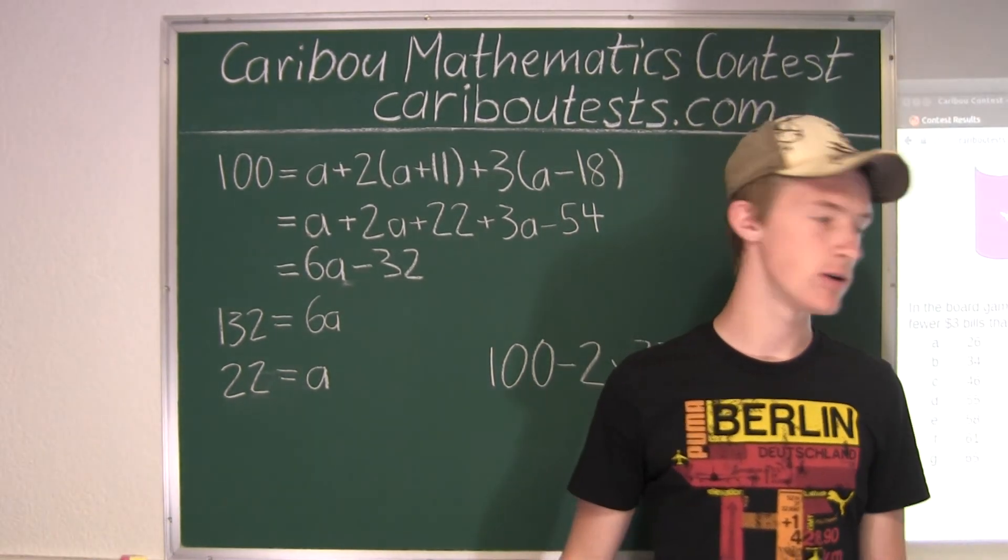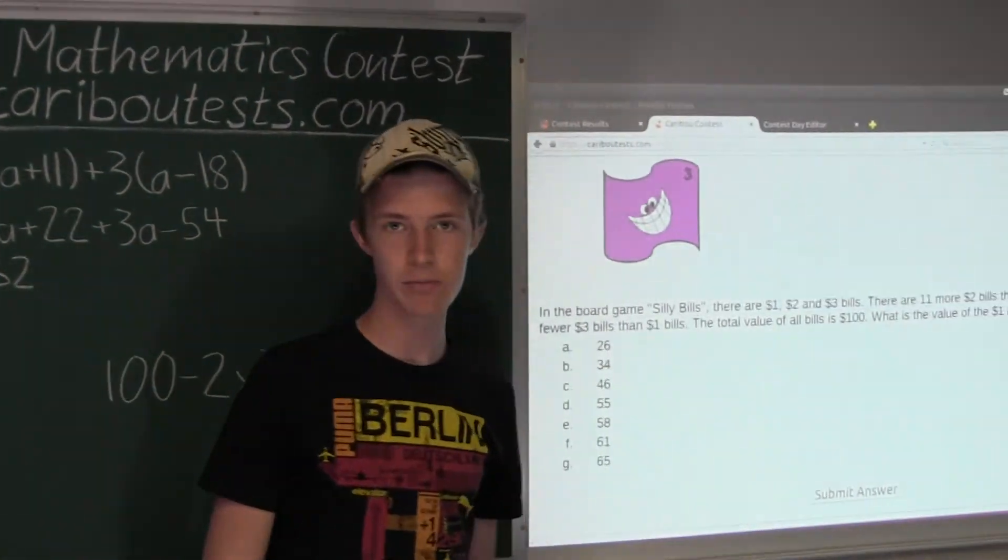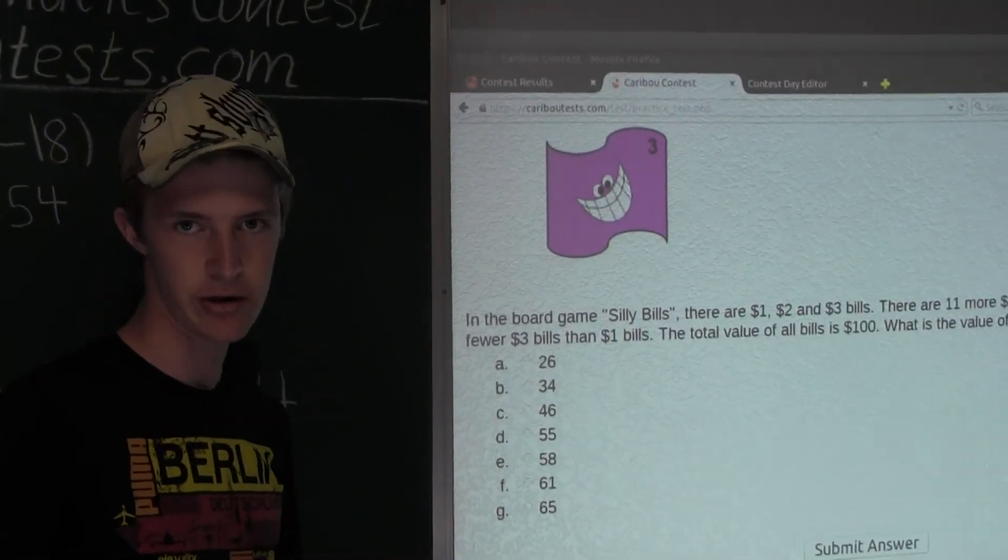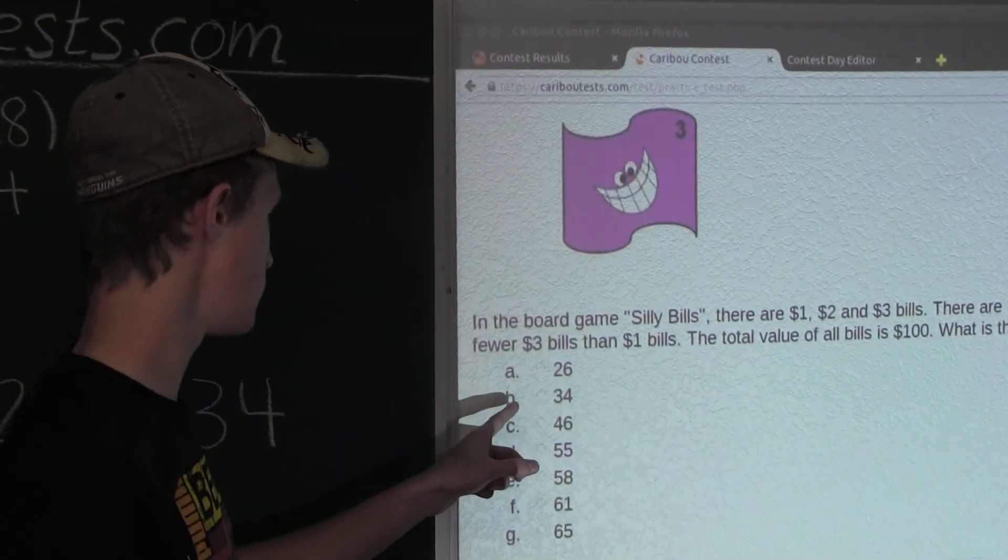So the value of $1 and $3 bills together is 34, which is option B.